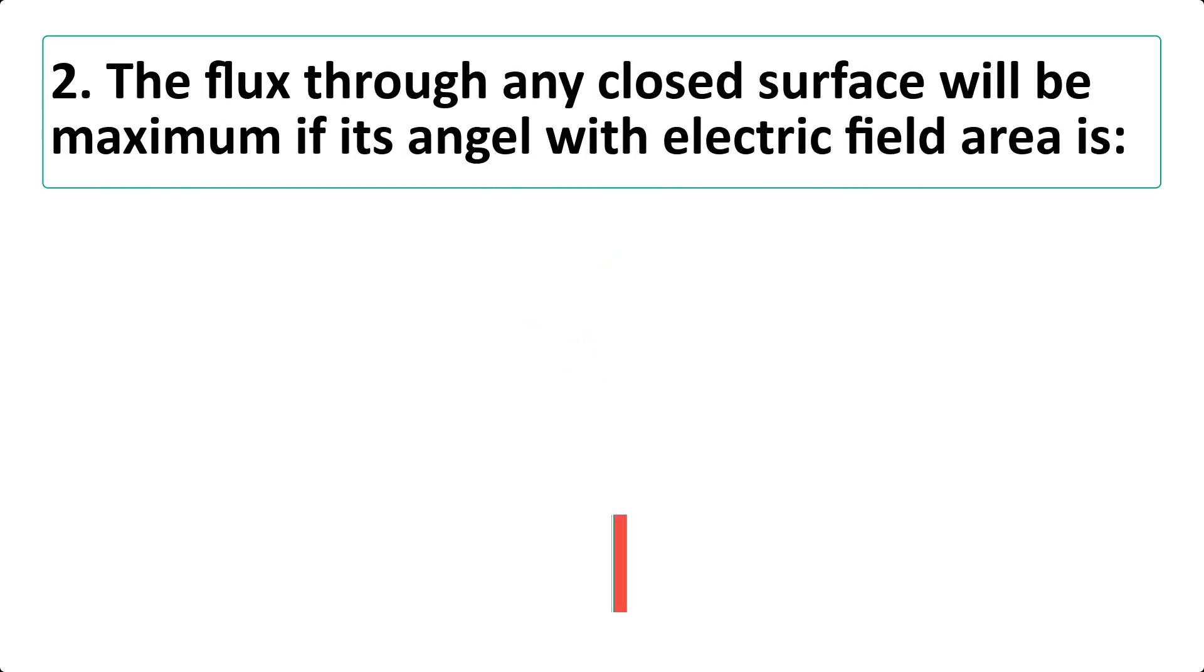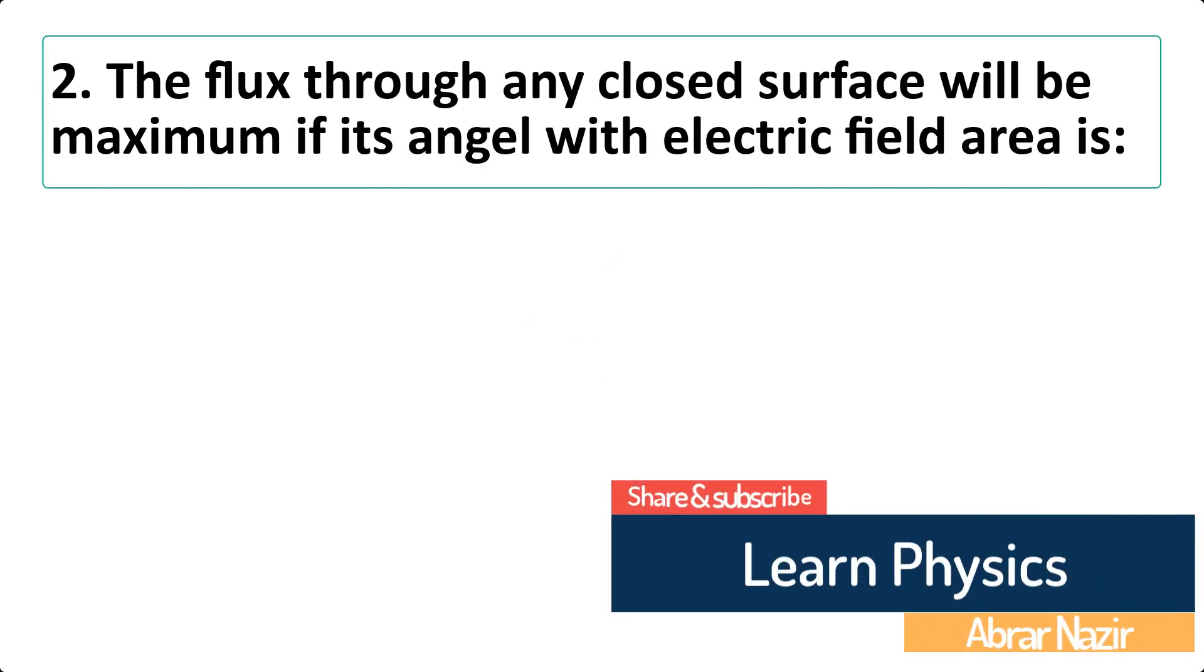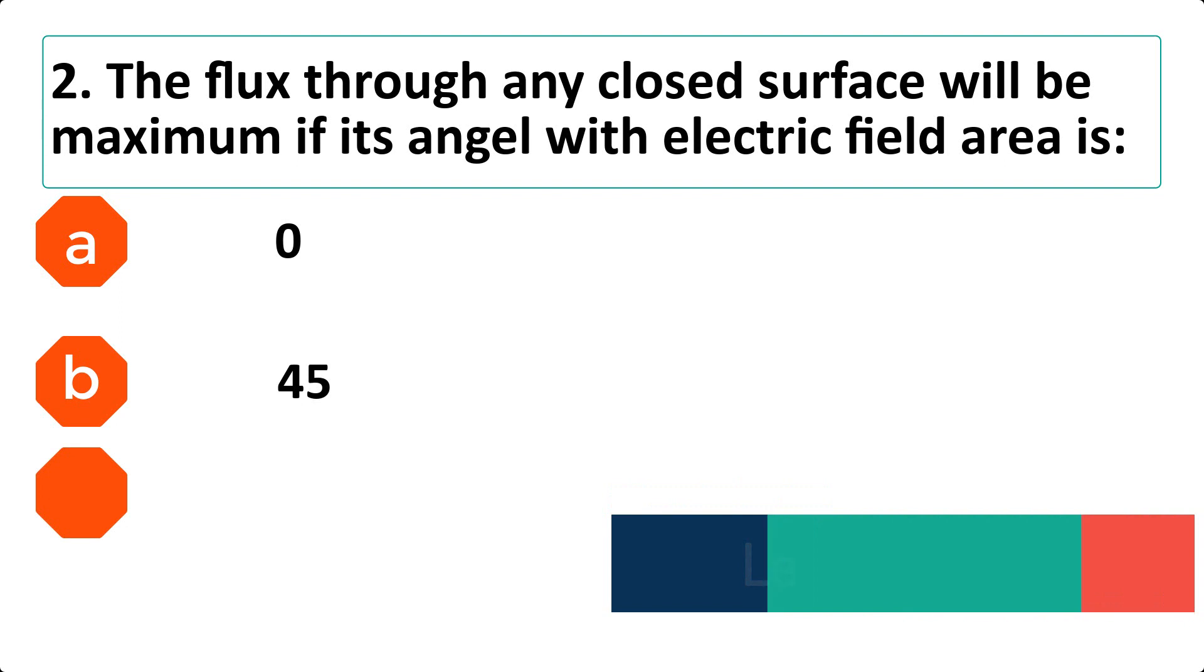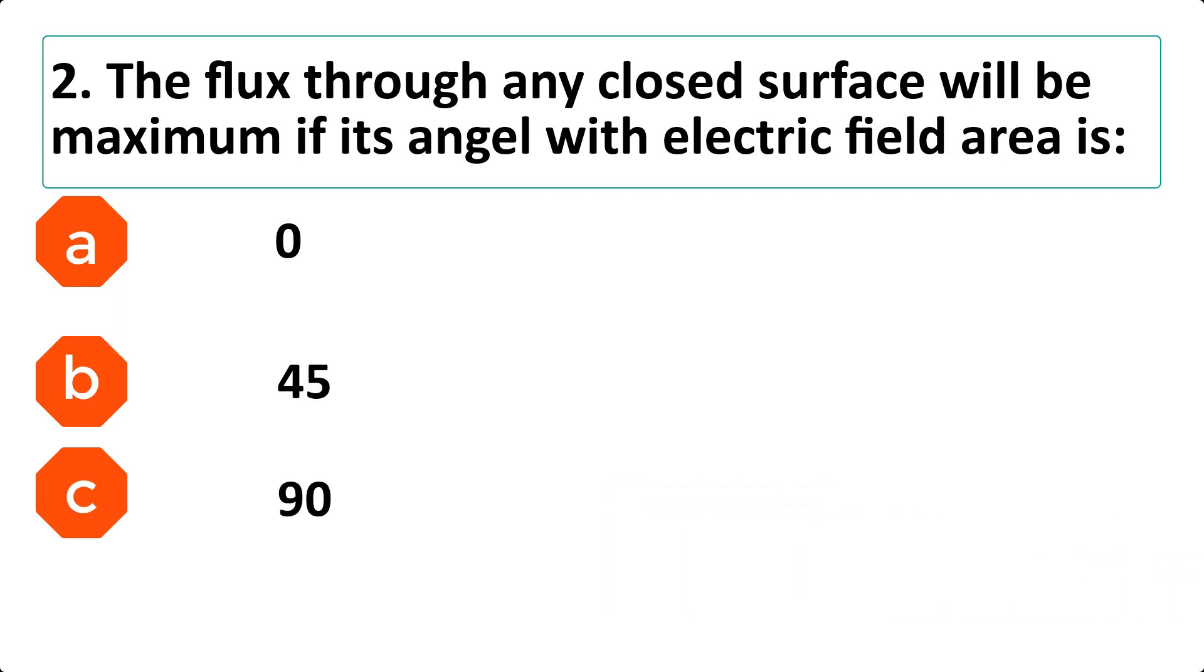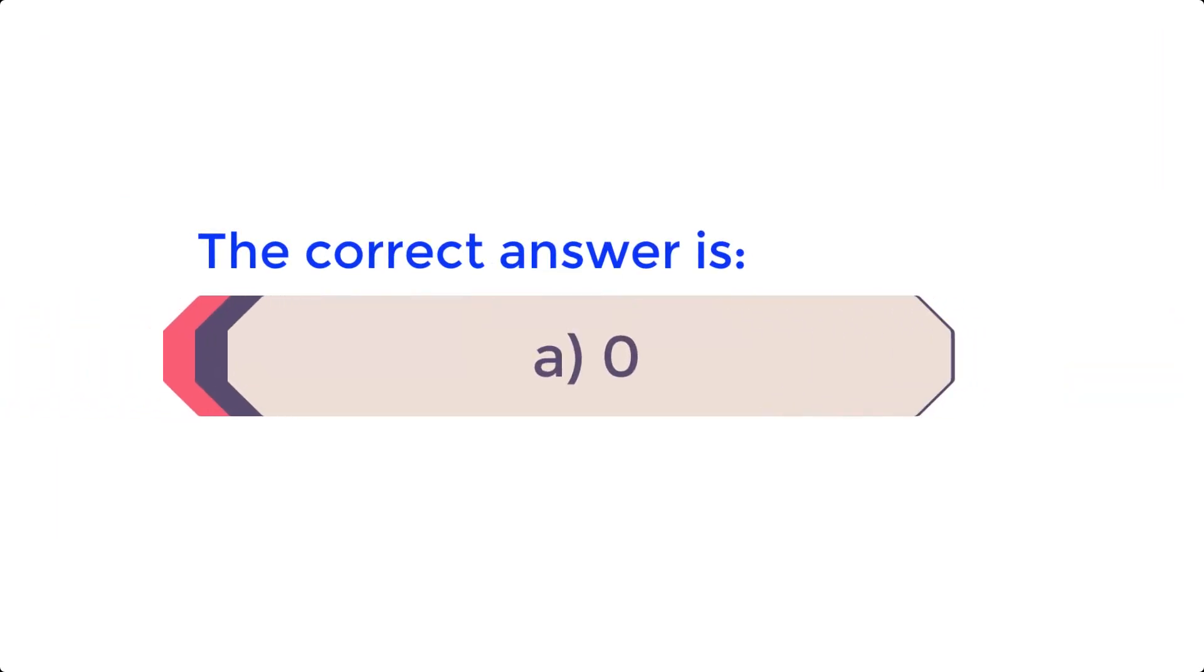Multiple choice question number 2. The flux through any closed surface will be maximum if its angle with the electric field area is: A. Zero degree. B. Forty-five degree. C. Ninety degree. D. One hundred eighty degree. The correct answer is A. Zero degree.